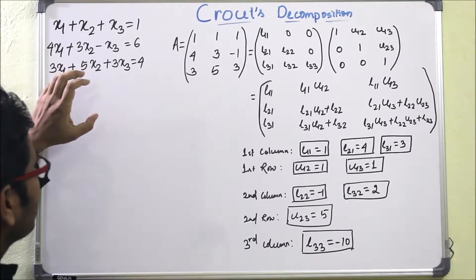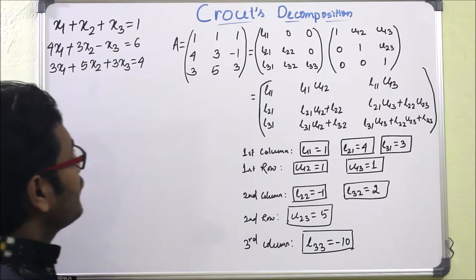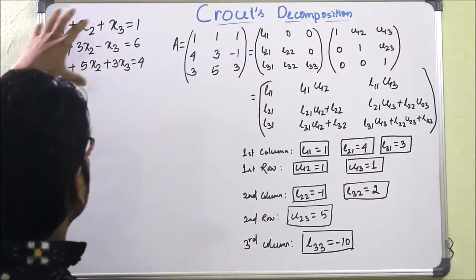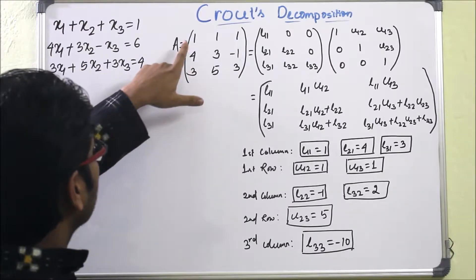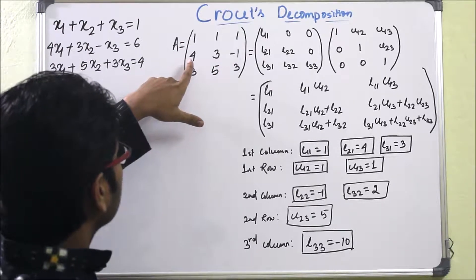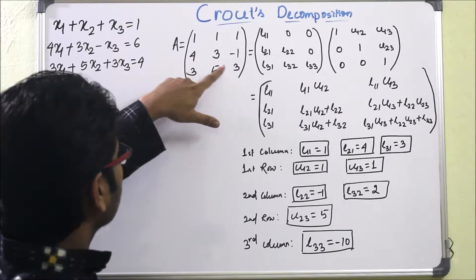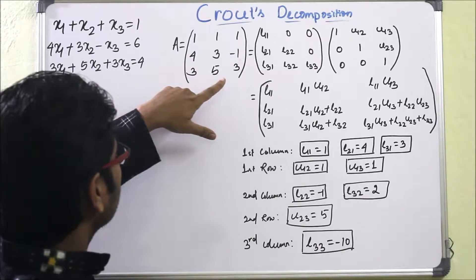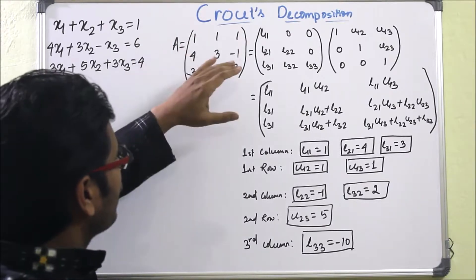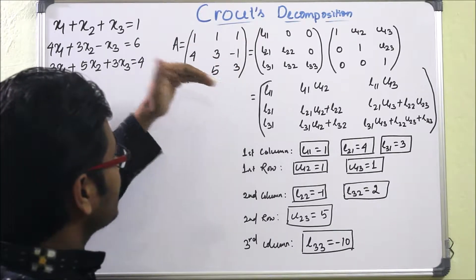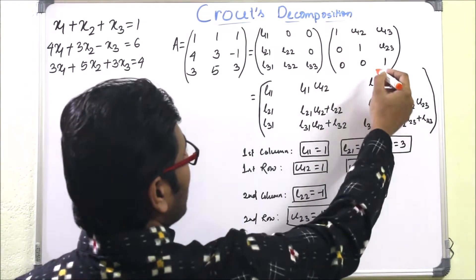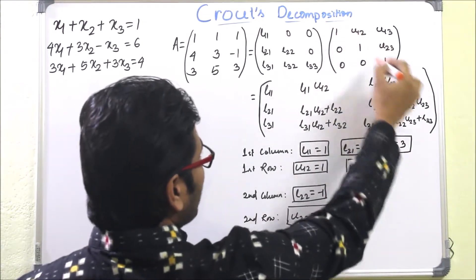In Crout's decomposition method, which is one kind of LU decomposition method, we have to write the coefficient matrix A. The first row is [1, 1, 1], the second row is [4, 3, −1], and the third row is [3, 5, 3]. We decompose this into a lower triangular matrix times an upper triangular matrix such that the diagonal entries of the upper triangular matrix are 1.